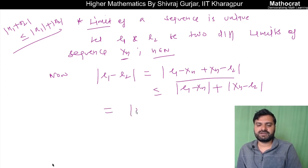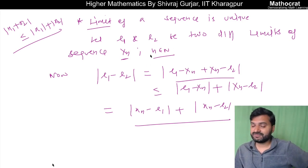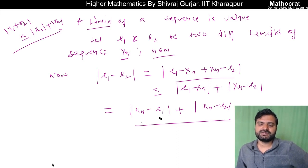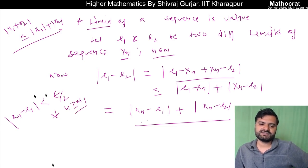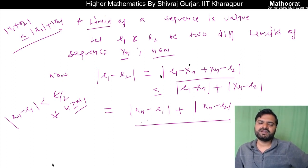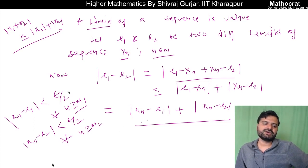Or we can write this as |xn minus L1| plus |xn minus L2|. Now it is given that both L1 and L2 are limits of xn — this is what we have assumed. So since L1 is the limit, |xn minus L1| will be less than epsilon/2 for every n greater than or equal to m1. Similarly, since L2 is also a limit, |xn minus L2| will be less than epsilon/2 for each n greater than or equal to some m2.